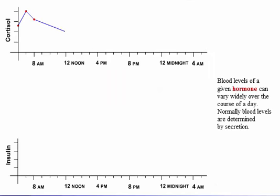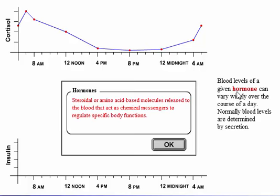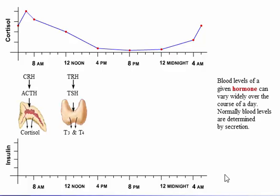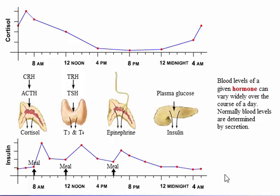Blood levels of a given hormone can vary widely over the course of a day. Normally, blood levels are determined by secretion. Hormones are not secreted at a constant rate; they are secreted in response to stimuli. Cortisol and thyroid hormone are secreted in response to hypothalamic and pituitary hormones. Epinephrine is secreted in response to sympathetic stimulation, and insulin in response to plasma glucose levels. Secretion of cortisol and thyroid hormone are modulated by negative feedback loops that keep blood levels within a given range around a set point. Negative feedback control does not imply constant levels of a hormone.